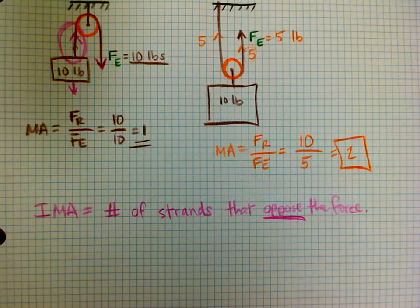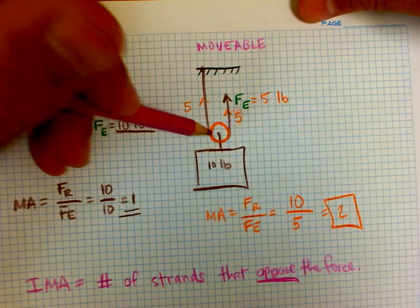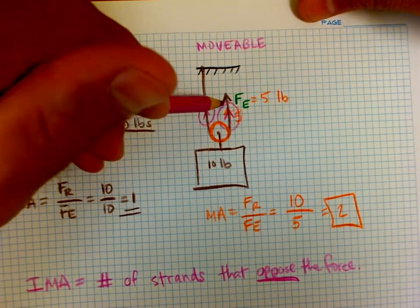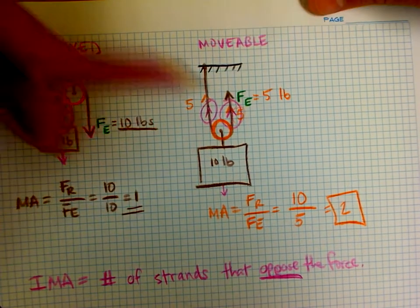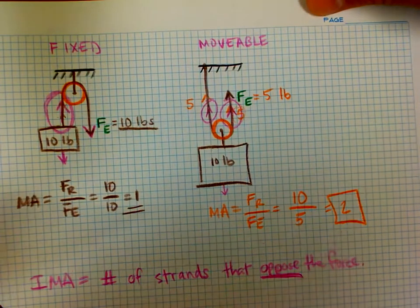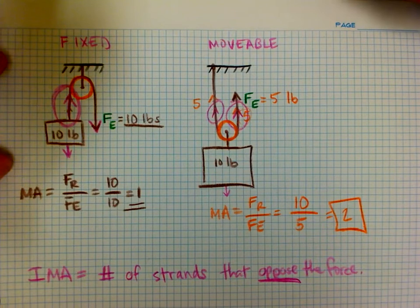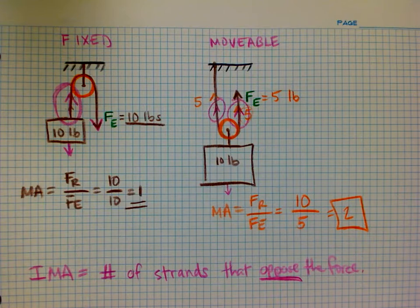For the movable pulley, this rope is pulling up and I'm also pulling up on this rope. Because both are going up against a downward force, I have two strands pulling upward, giving a mechanical advantage of two. For a simple pulley system, we simply count the number of strands that oppose the force, and that gives us the mechanical advantage.